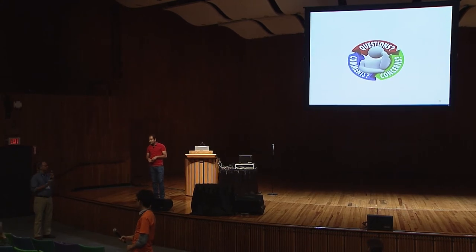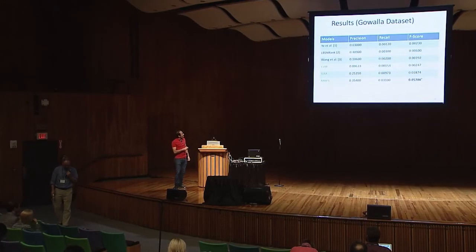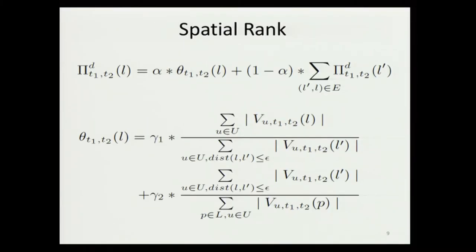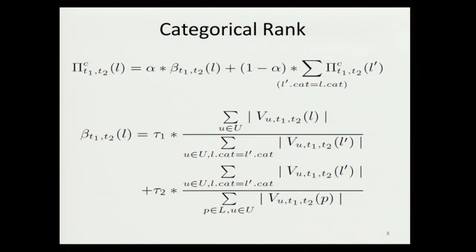Can you comment on the scalability and computational complexity of the method, maybe in comparison to some baselines? These baselines are context-aware recommendation models that use one or two additional aspects. Our model should be scalable because the relations are not complex — we just use the frequency of check-ins for particular locations and location categories. The relation is simply frequency of check-ins, so it should scale well for millions of check-ins, and our dataset already contained millions of check-ins.